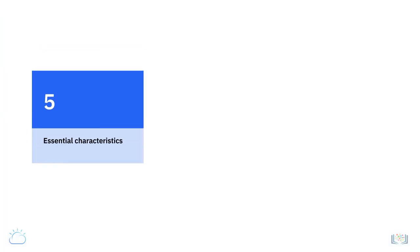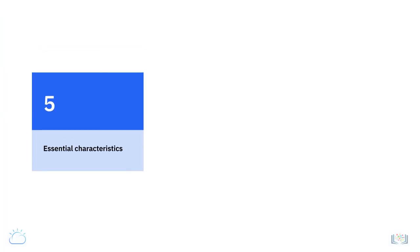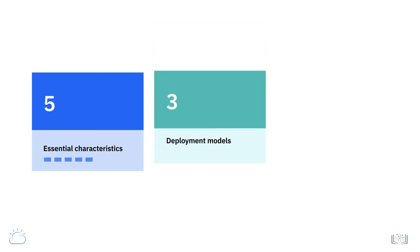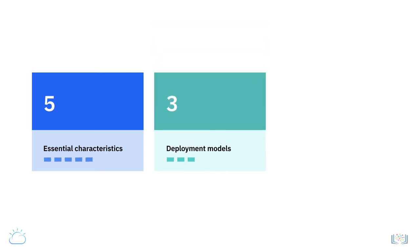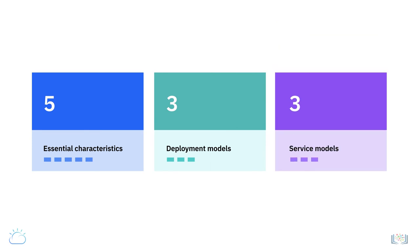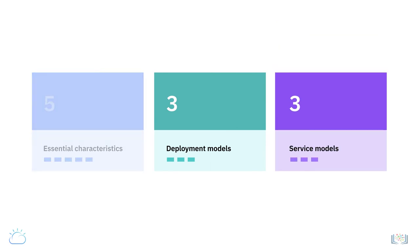As mentioned earlier, the cloud model is composed of five essential characteristics, three deployment models, and three service models. We just went over the five essential characteristics. While we will go into greater depth on the deployment and service models in later videos, let me leave you with a brief overview of these models.